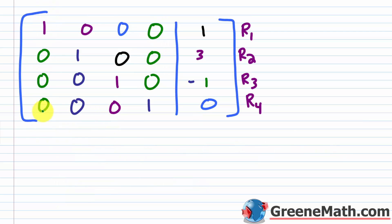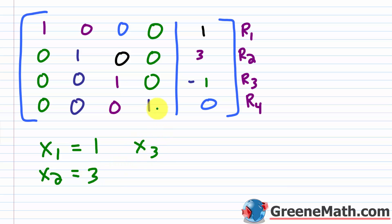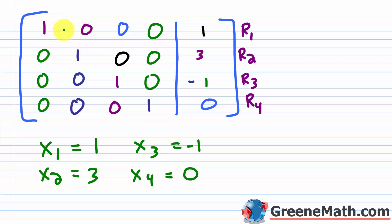Reading off the solution from the matrix: X₁ = 1, X₂ = 3, X₃ = negative 1, and X₄ = 0. Remember, if you're using W, X, Y, Z notation, the leftmost column is W, then X, then Y, then Z — alphabetical order. With subscript notation it's 1, 2, 3, 4 in numerical order.